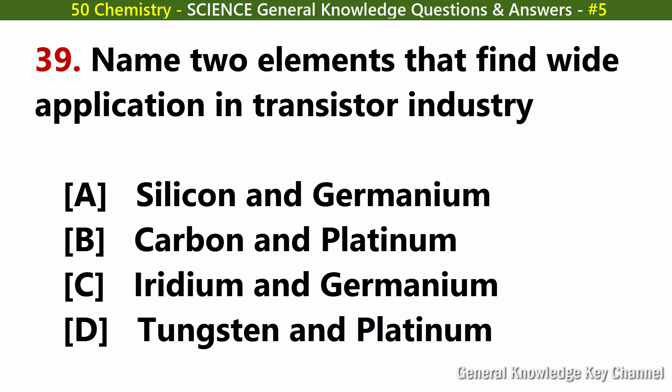Name two elements that find wide application in the transistor industry. Answer A: Silicon and germanium.